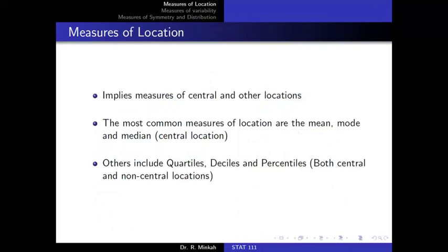We now turn to measures of location. We have central locations and other locations. Central locations refer to the mean, mode, and median — these measure the central part of a data set. Quartiles and percentiles can measure both central and non-central location; for instance, the middle value of quartiles corresponds to the median, which is a measure of central location.